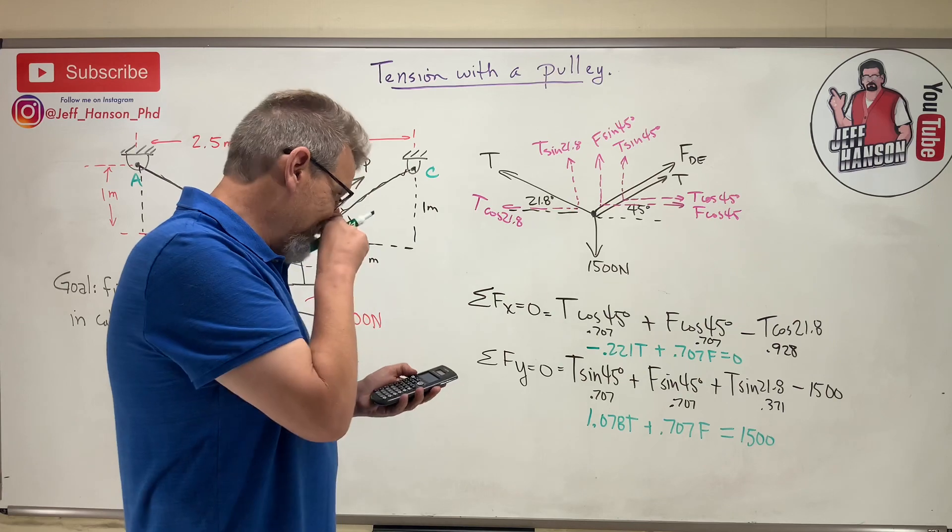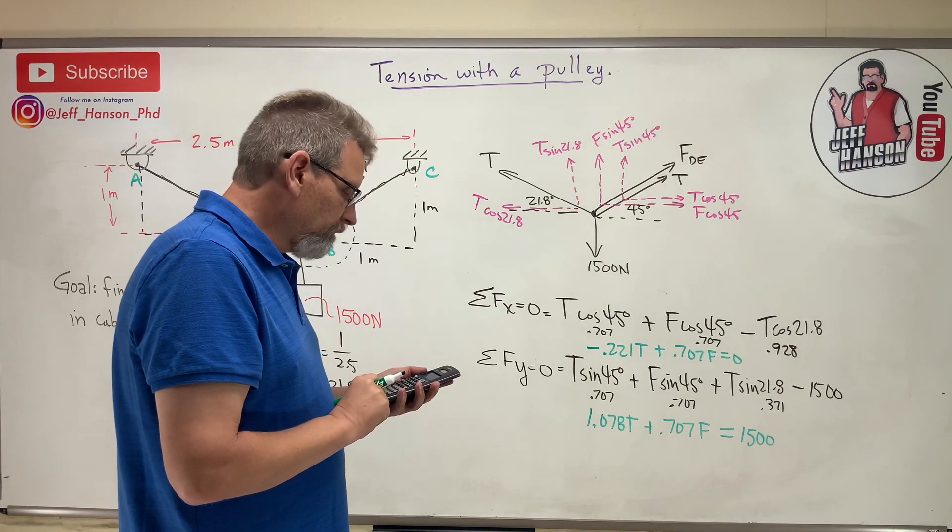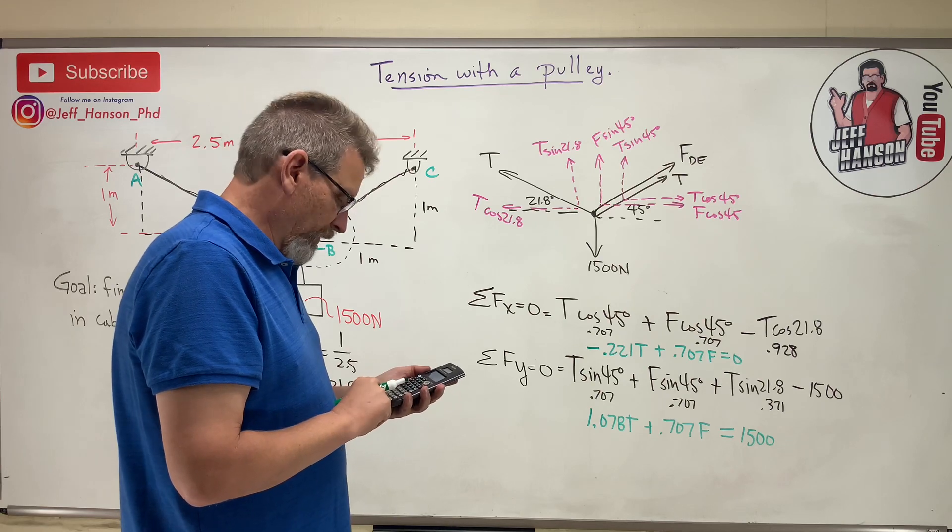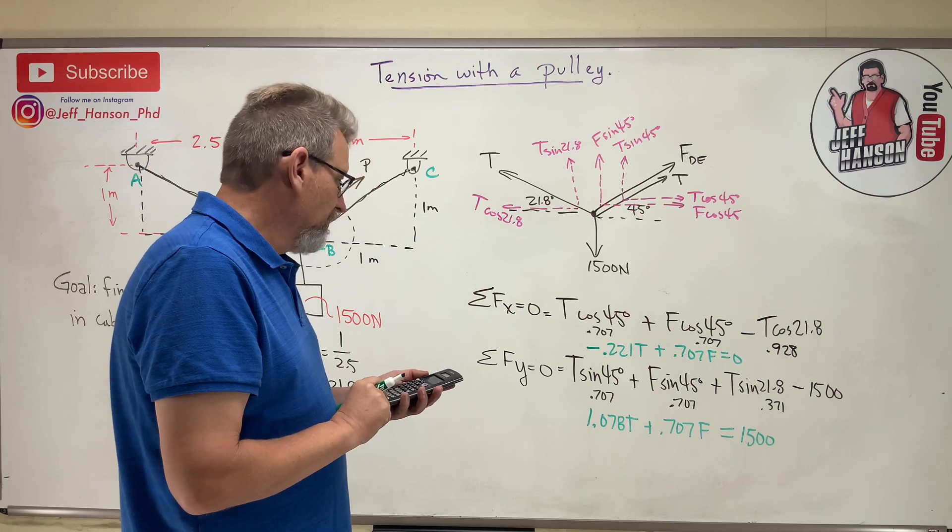Okay, so I'm putting this in: negative 0.221, enter, enter, 0.707, enter, enter, enter, and then 1500, enter. Now I'm on solve. Solve, point, done. How easy is that?